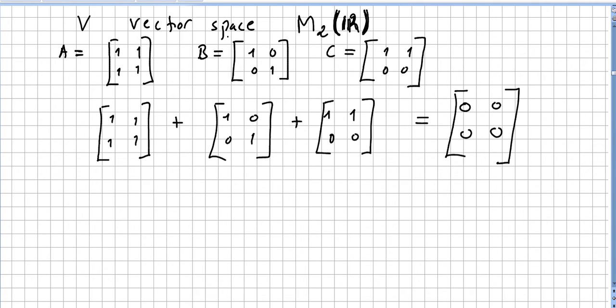Zero in this vector space, the zero of this vector space is the matrix with entries 0 0 0 0. But we have to put some scalars here so that will be x, y and z.